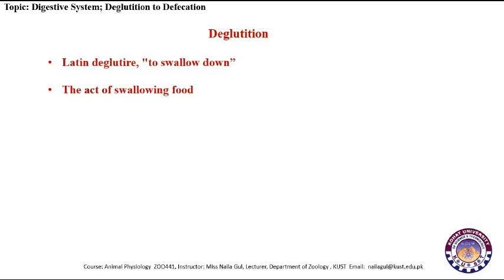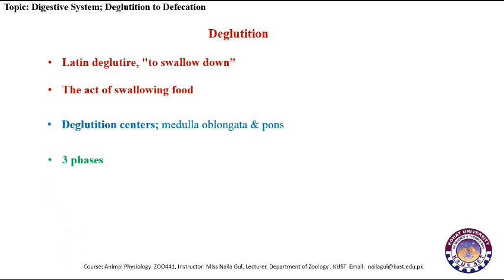The word deglutition is a derivative of a Latin word 'deglutir', that means to swallow down. Thus, the act of swallowing food is called deglutition. The process of deglutition is controlled by the brain, specifically the deglutition centers located in the medulla oblongata and pons of the brain. This process involves three phases: the buccal phase, the pharyngeal phase, and the esophageal phase.